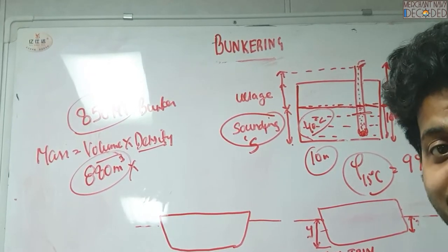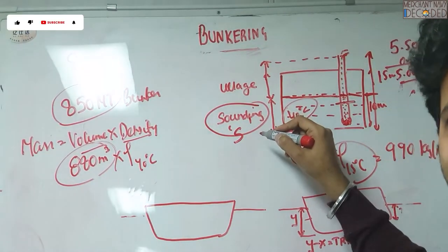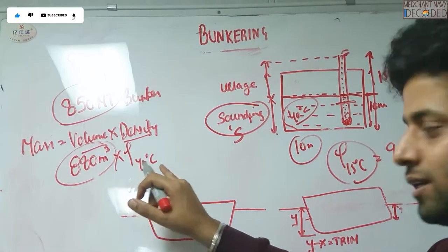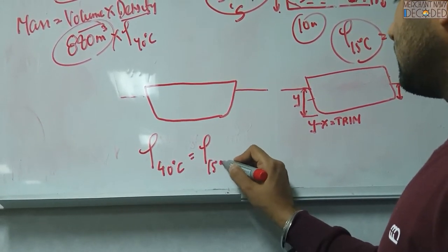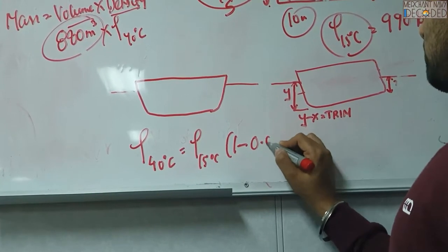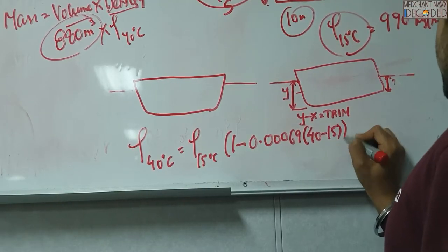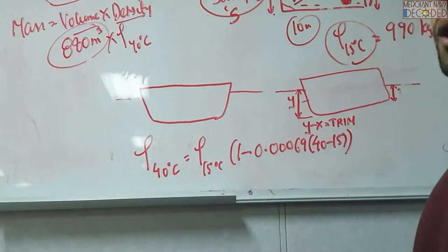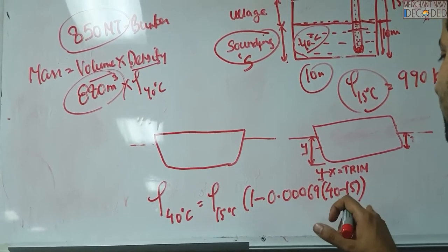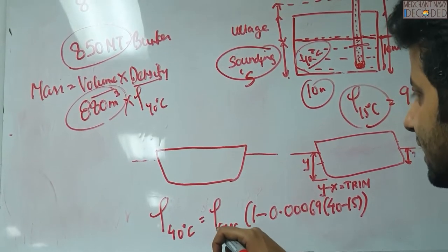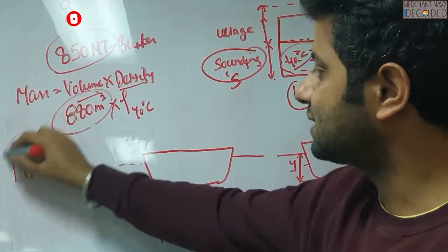So I need density at 40 degree centigrade, not at 15. Because this volume that I have got is at 40 degree centigrade. So I have to calculate density at 40 degree centigrade. And how do I do that? Rho 40 degree centigrade is equal to rho 15 degree centigrade into 1 minus 0.00069 into 40 minus 15, that is delta T. That is the formula that we have got. Maybe you can get from different charts as well. 1 minus 0.00069 into delta T, that is 40 minus 15. So you get the net density which is definitely less than the density at 15 degree centigrade. And that is how you get the effective mass that you have inside.